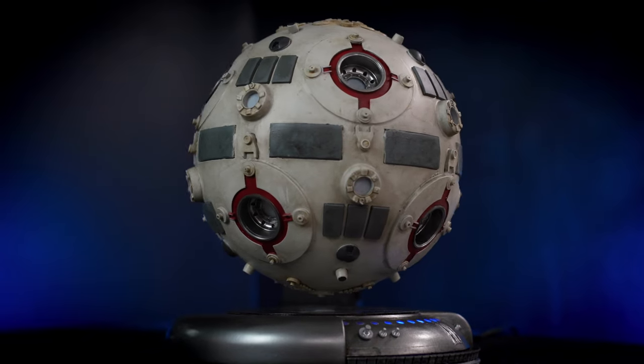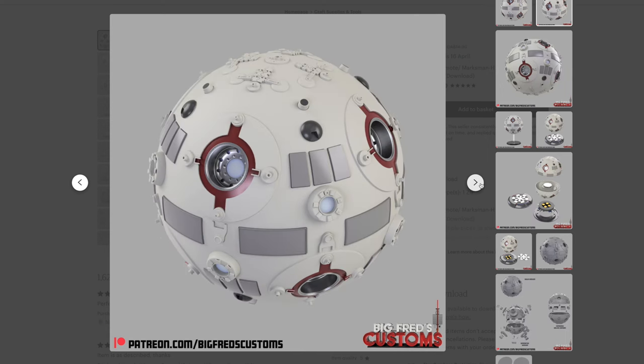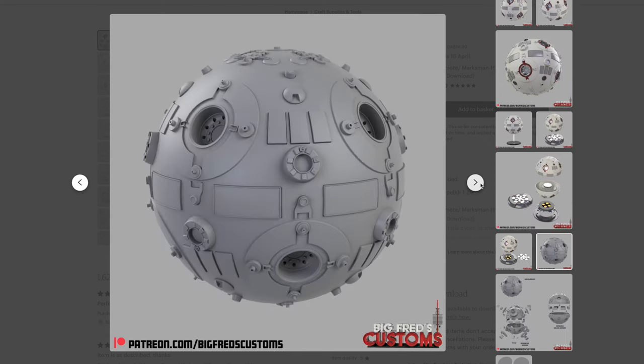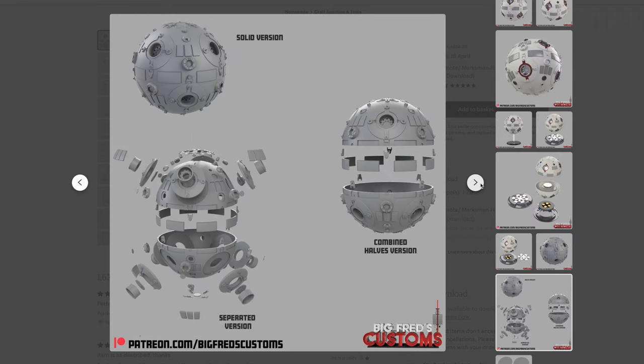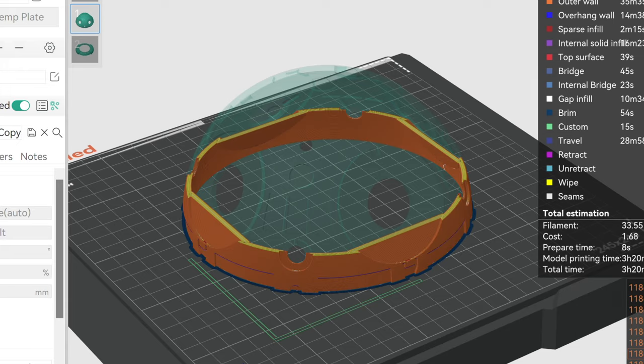Today we're going to be building this floating Jedi training remote. I'll be using BigFred's Customs file for this project as it has many possible print and display options, including a version that is compatible with one of these magnetic levitation bases.